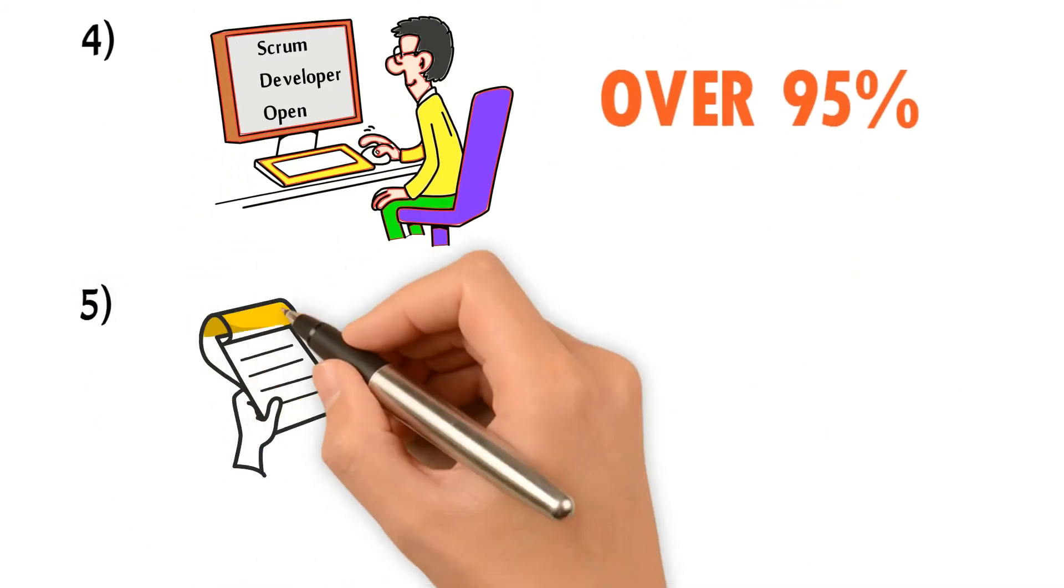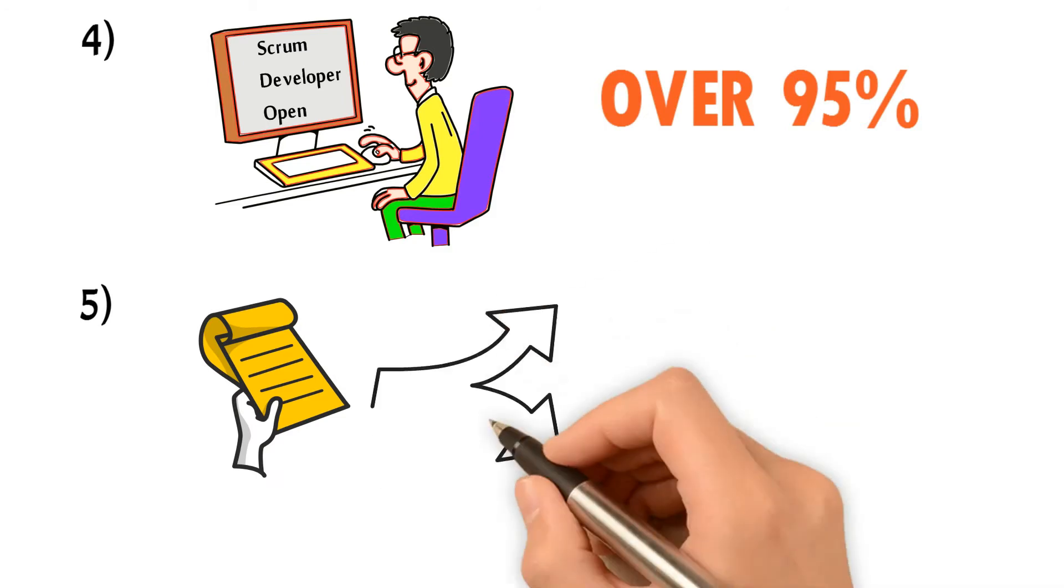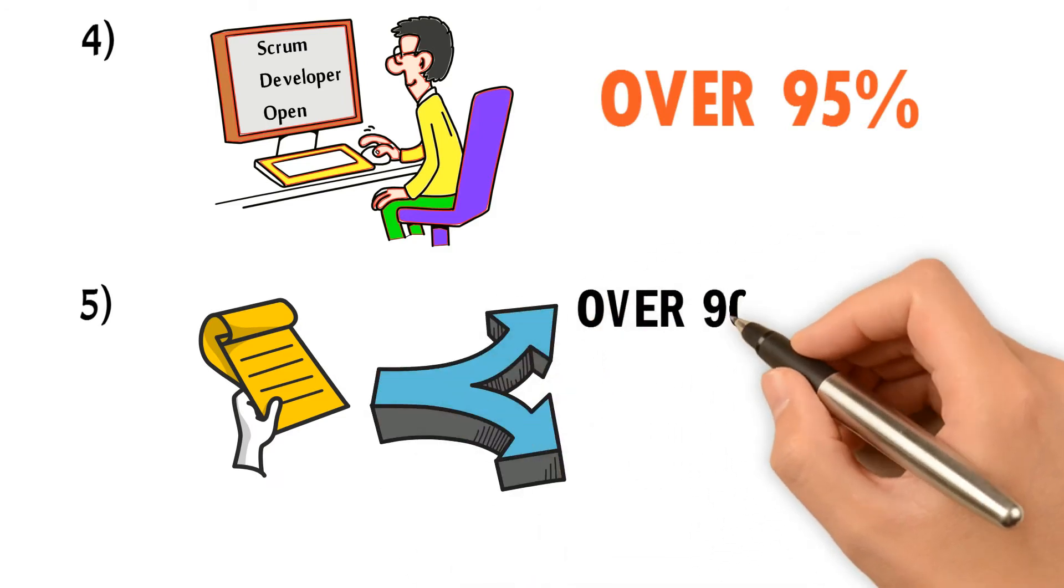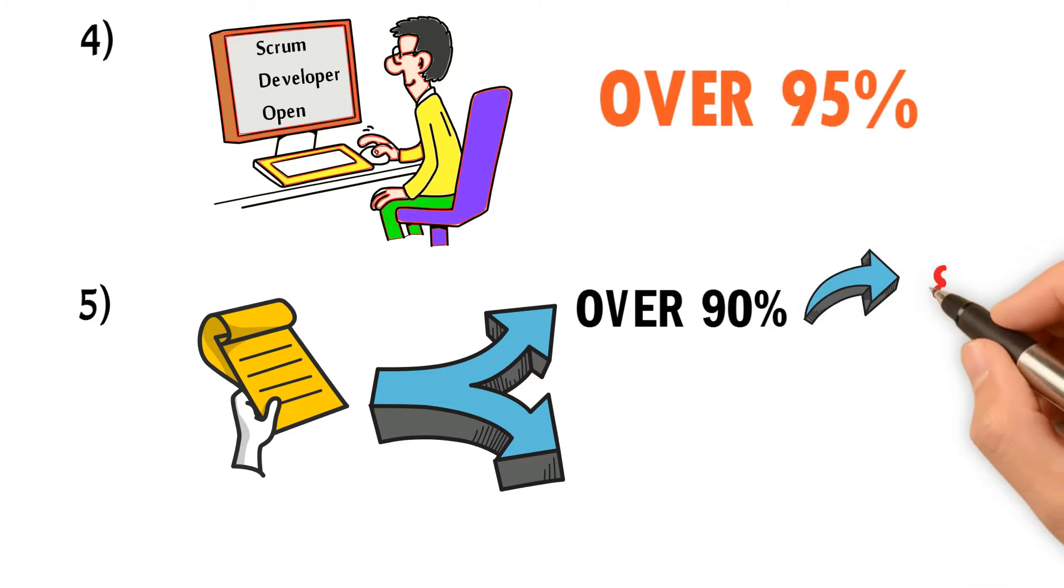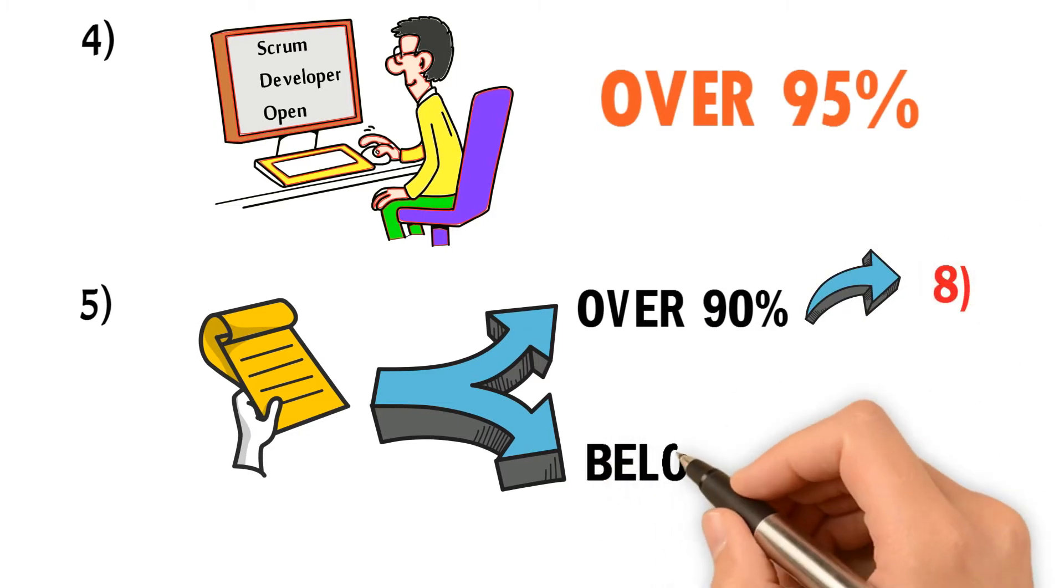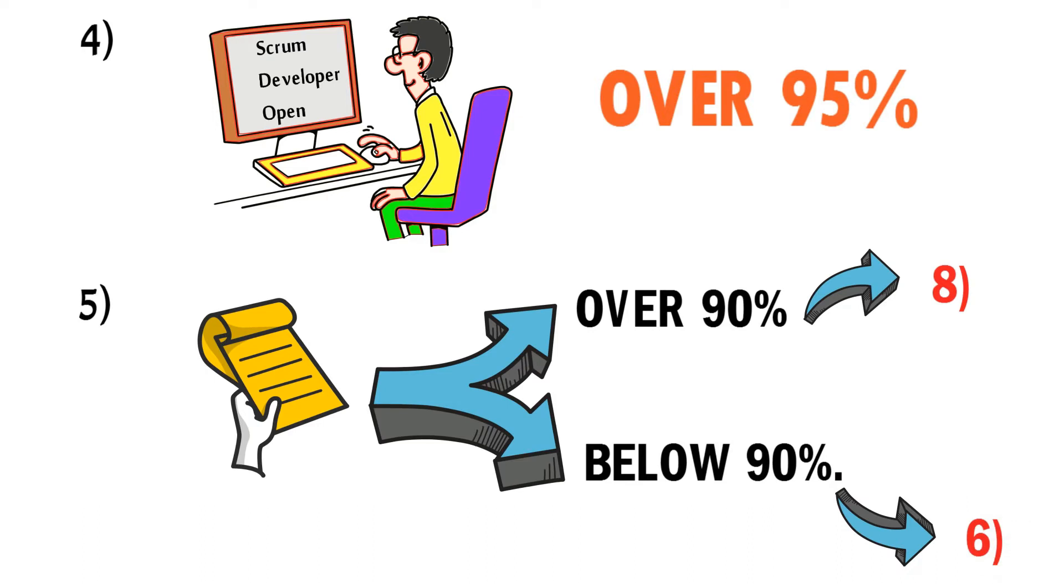Five, take mock exam number one. If you pass and score over 90%, then go to step number eight. If you score below 90%, go to step number six.